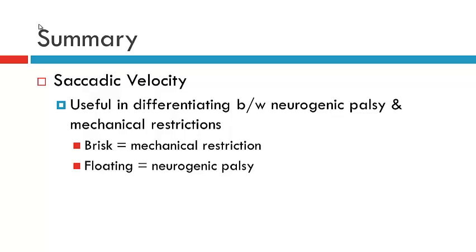In summary, saccadic velocity is a useful tool to utilize in differentiating between neurogenic palsies and mechanical restrictions. If we see a brisk saccade, we're looking at a mechanical restriction, and if we see a floating saccade, it's likely to be a neurogenic palsy.